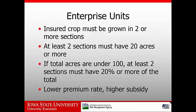A little more detail on enterprise units. First of all, you have to be growing the crop in two or more sections — that refers to township sections within where the land you own or rent is located — and at least two of those sections must have at least 20 acres or more. So basically we can't insure very small land parcels as a separate policy. If the total acres add up to less than 100 acres, then at least two of those sections must have 20% or more of the total, again avoiding insuring very small parcels separately.